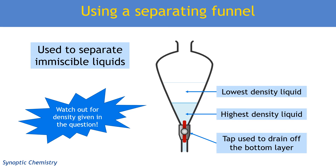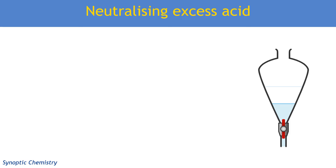At the bottom of the separating funnel is a tap, just like the tap at the bottom of a burette, which you can use to let out one of the liquid layers. So the first thing we can do is tip our whole reaction mixture in there. If our aqueous layer — the layer containing all the aqueous dissolved substances — is at the bottom, we can simply drain it off and keep the organic liquid at the top of the funnel. But that's not enough — you can't just drain off the aqueous layer and assume there are no other contaminating substances.